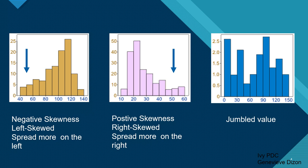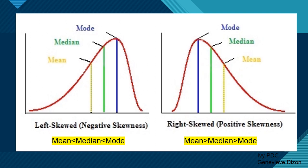And sometimes it can give a jumbled distribution where you may not see where the mean is. This is when the mean, median, and mode may not correlate with each other.